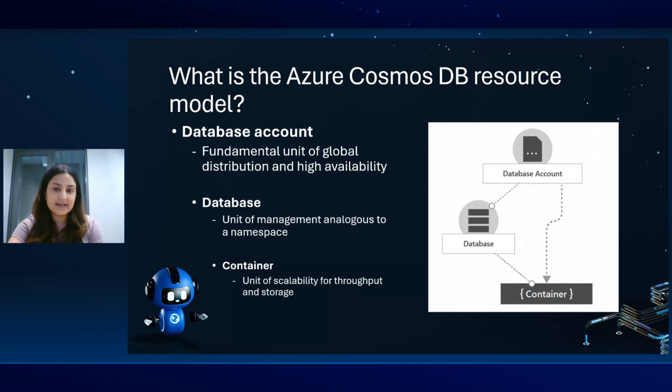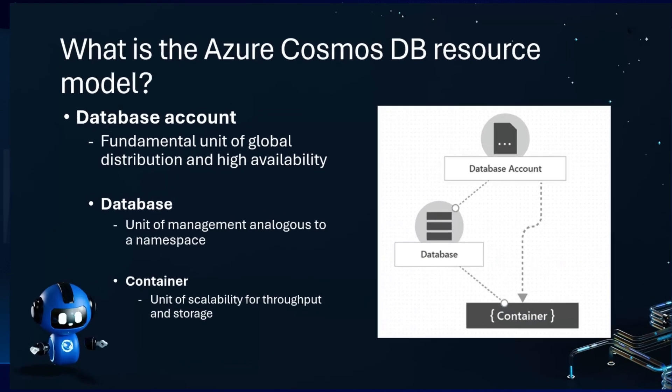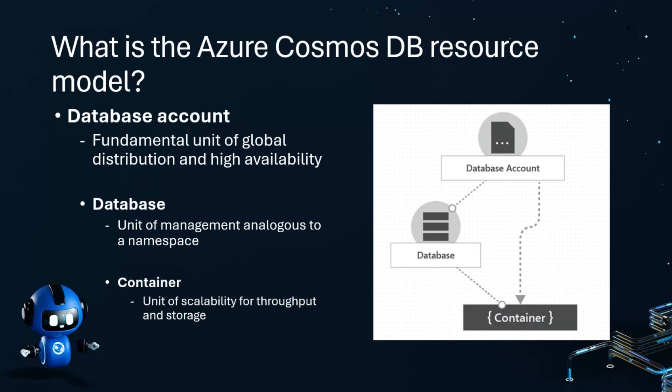As a recap, let's go through the Azure Cosmos DB resource model. The first step is to create a database account in a subscription. These serve as the fundamental unit of global distribution and high availability. Within each account, you can create a database, and within each database, you can create individual containers that store your application's data. Your containers serve as the unit of scalability for throughput and storage, and even within the container, your data is organized by a partition key.